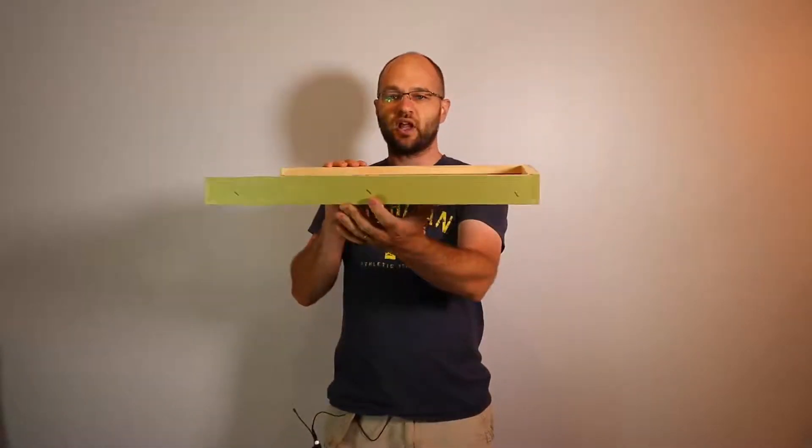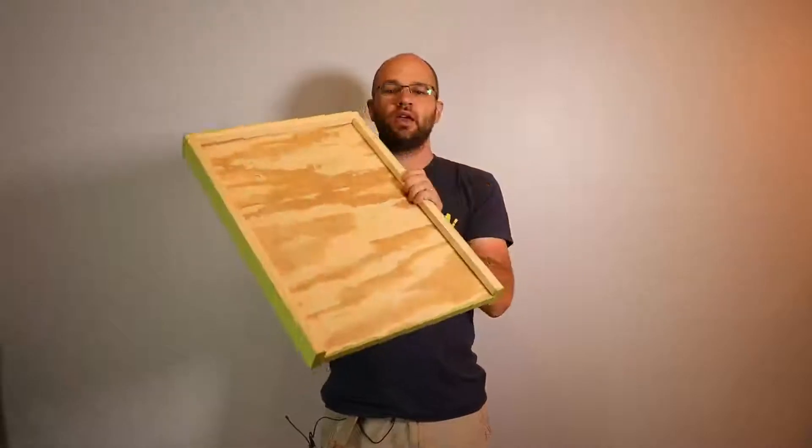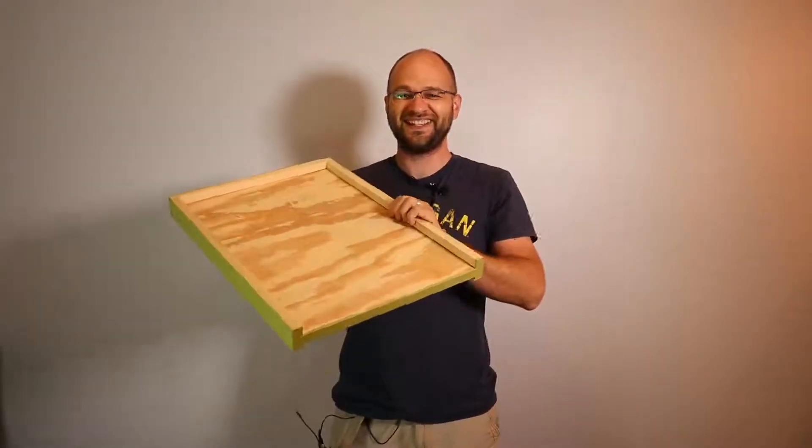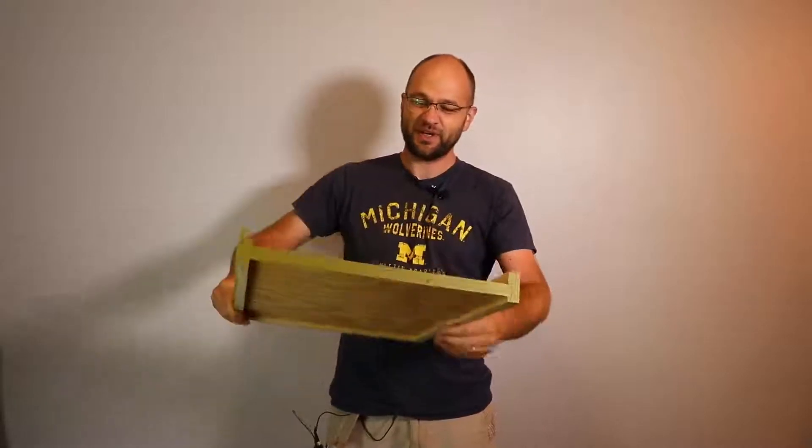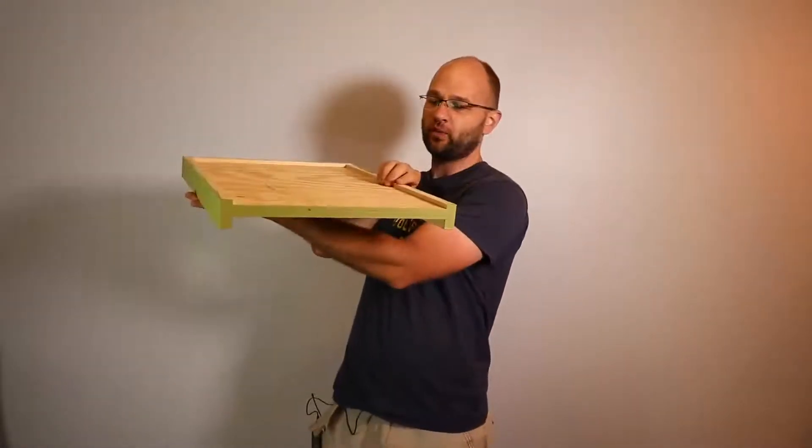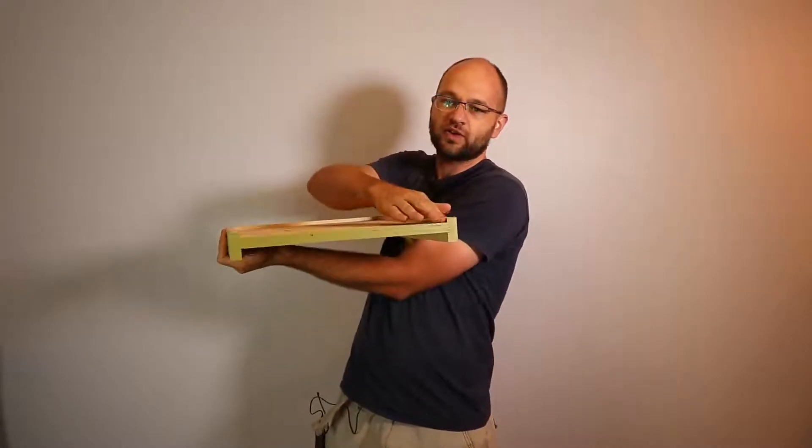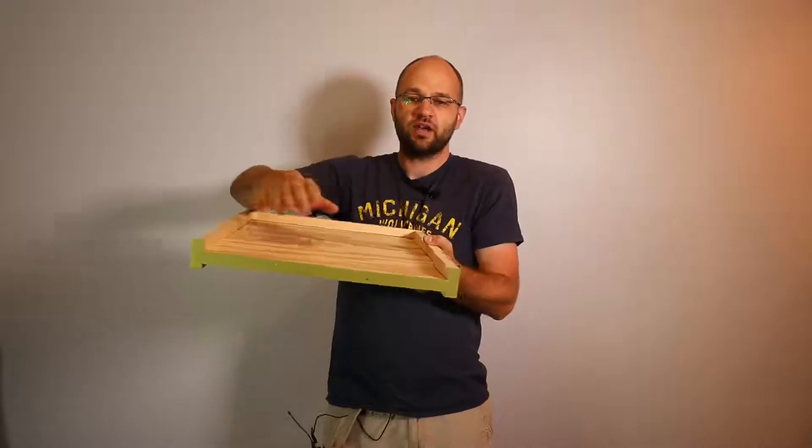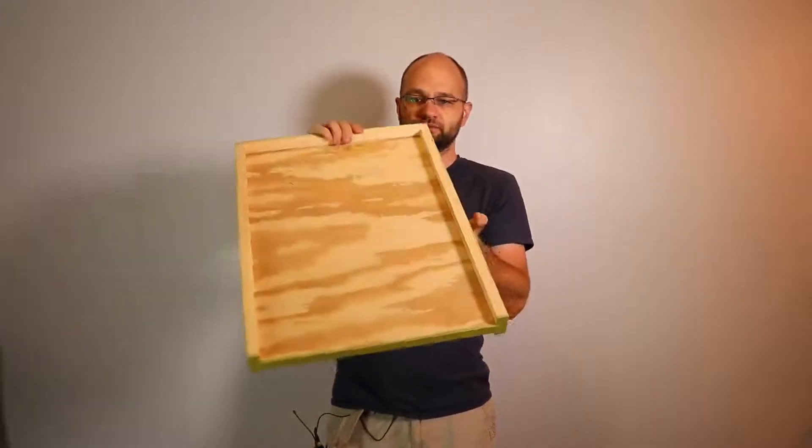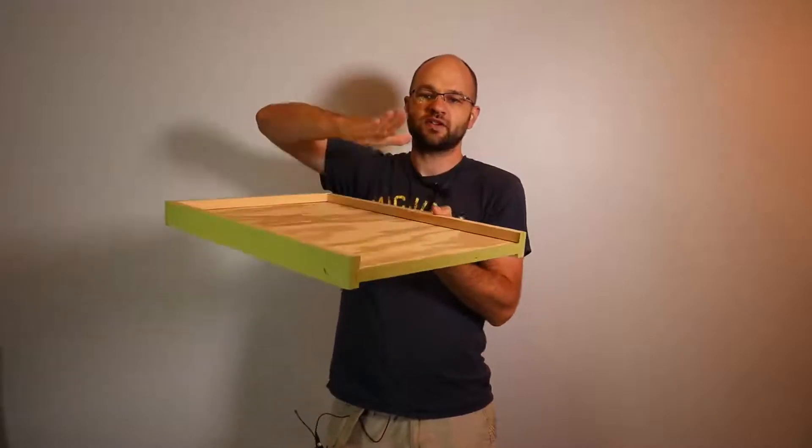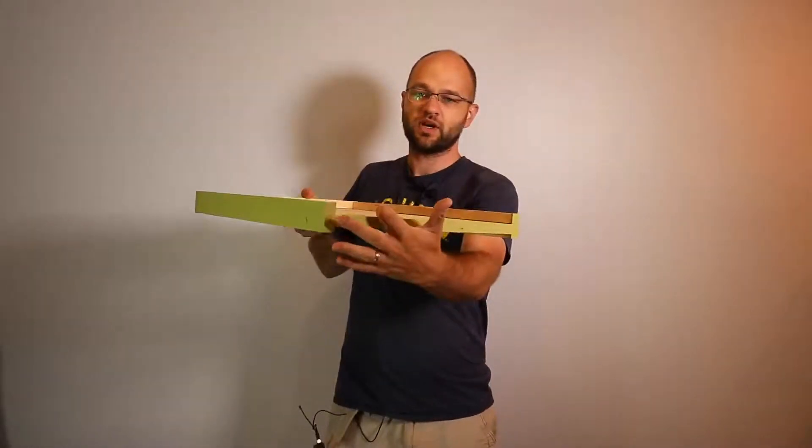This is a solid bottom board. It has a solid bottom, which is pretty obvious. And it's reversible. On one side, you have a smaller entrance, so you can flip this over. On the other side, you have a bigger entrance. That's all there is to it. The hive sits on top of this. The bees enter through here.